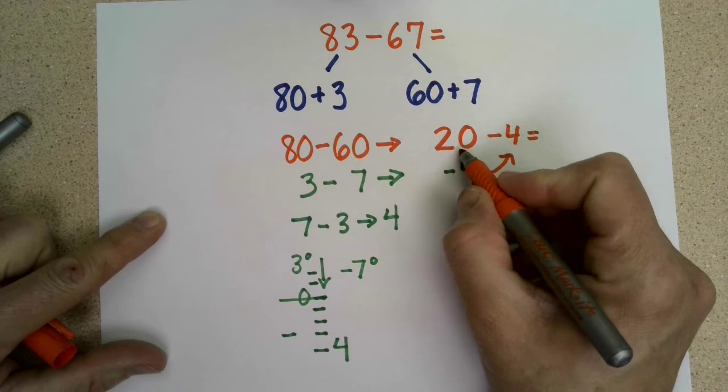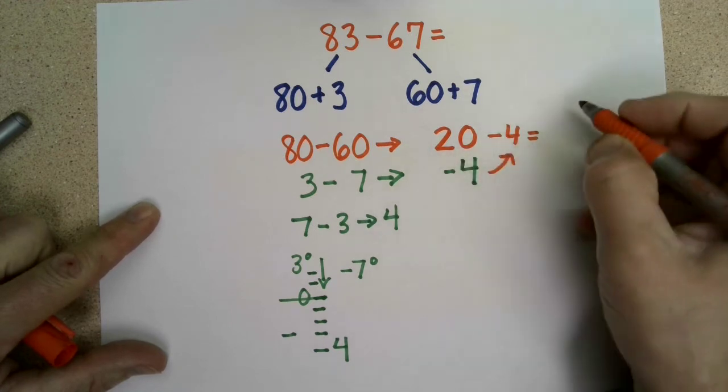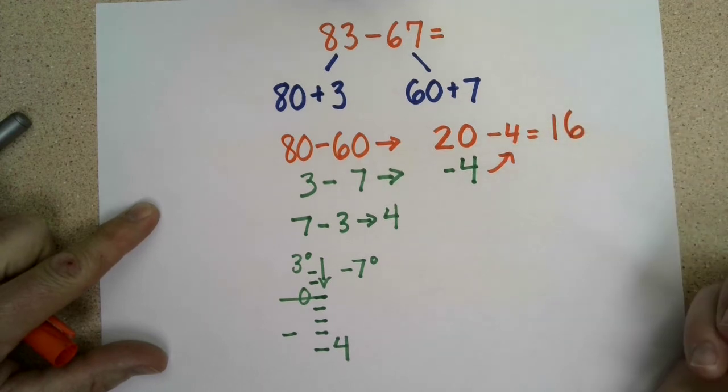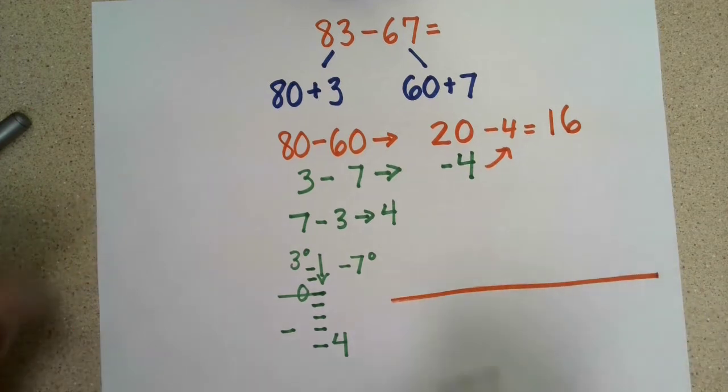So let's try and bring that up here and think, what is 20 minus 4? Well, we can count back 2 to get to 18, and 2 more to get to 16. So 20 minus 4 would be 16, which is our actual answer. We can check that by using our jumps on our number line.